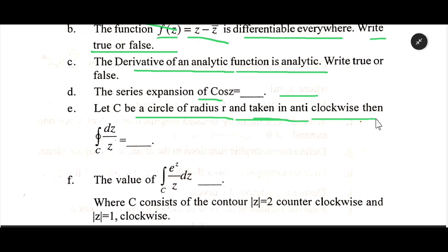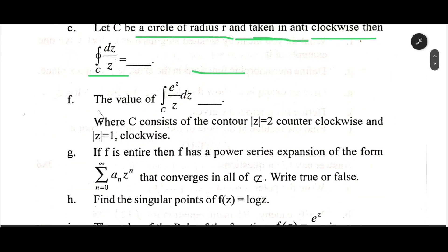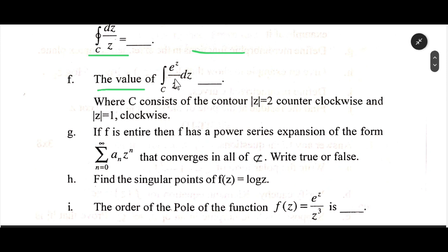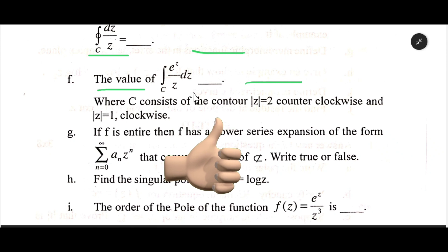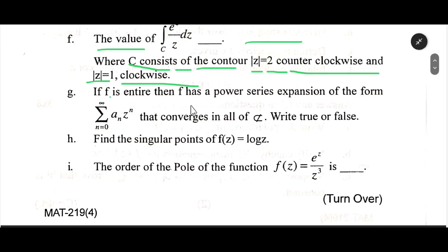Let c be taken in the anti-clockwise direction. Then the integration of dz/z equals dash. Find the value of the integration of e^z / z dz equals dash, where c consists of the contour |z| = 2 counter-clockwise and |z| = 1 clockwise.